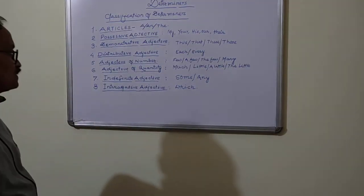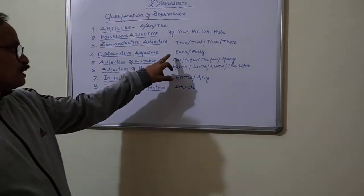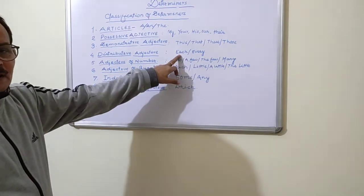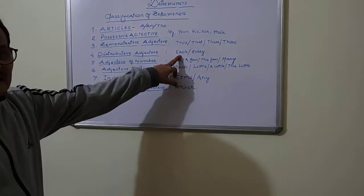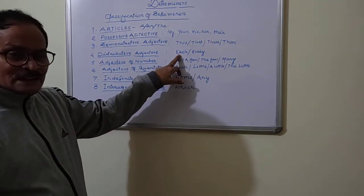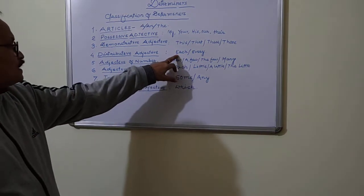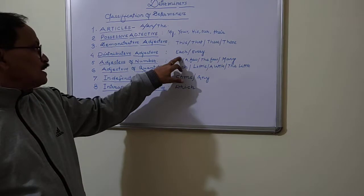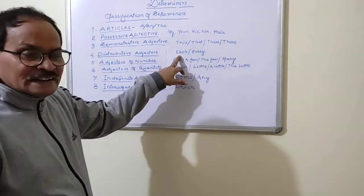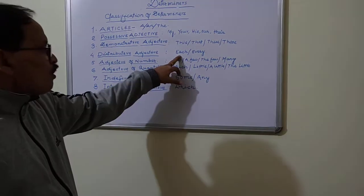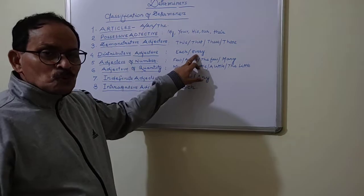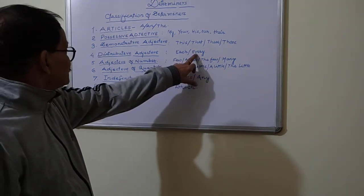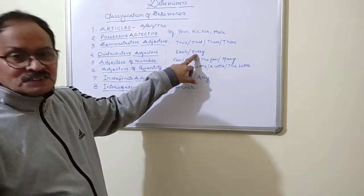The fourth classification is distributive adjective. Examples are: each, every. For example, 'each girl will get a prize' — 'girl' is the noun here and 'each' has been placed before it as a distributive adjective, and it is not simply a distributive adjective but also a Determiner. 'Every man wants to remain happy' — 'man' is the noun and 'every' is the distributive adjective as well as a Determiner.